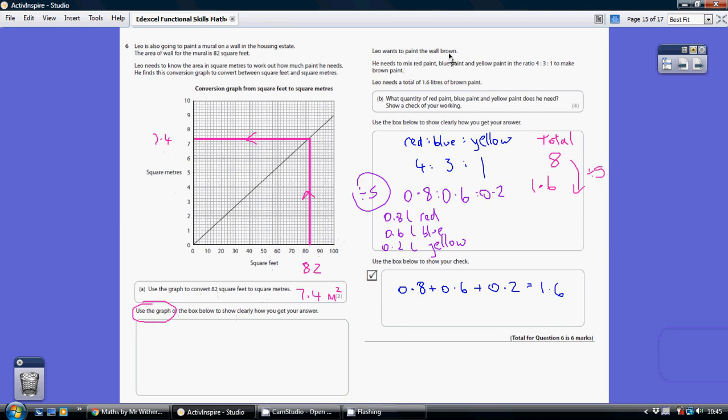He wants to make some brown paint. You have to mix red, blue and yellow in the ratio of 4 to 3 to 1. So 4 red, 3 blue and 1 yellow to give us brown paint.